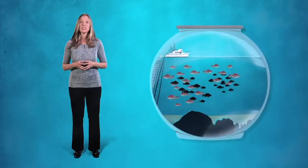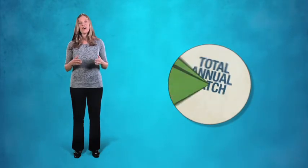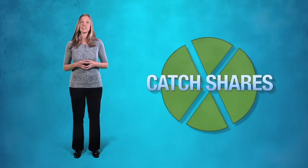There are no easy answers. But the best way to turn the situation around in both the short and long term is to start by using science to set a total annual catch that's appropriate for each fishery. Then divide that up into shares for the fishermen. They're called catch shares.